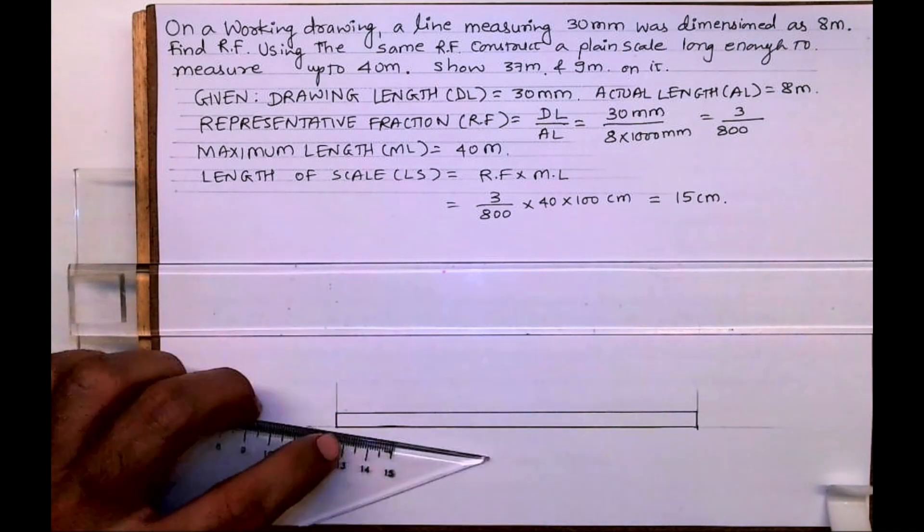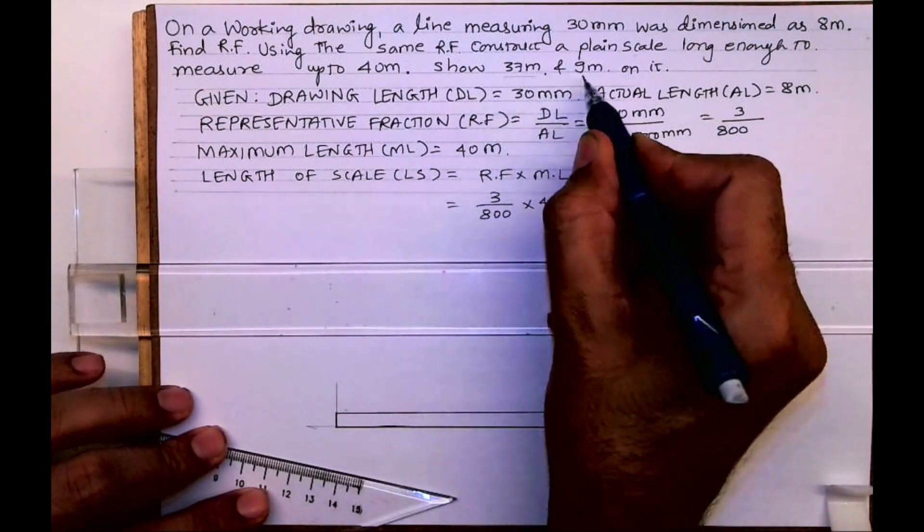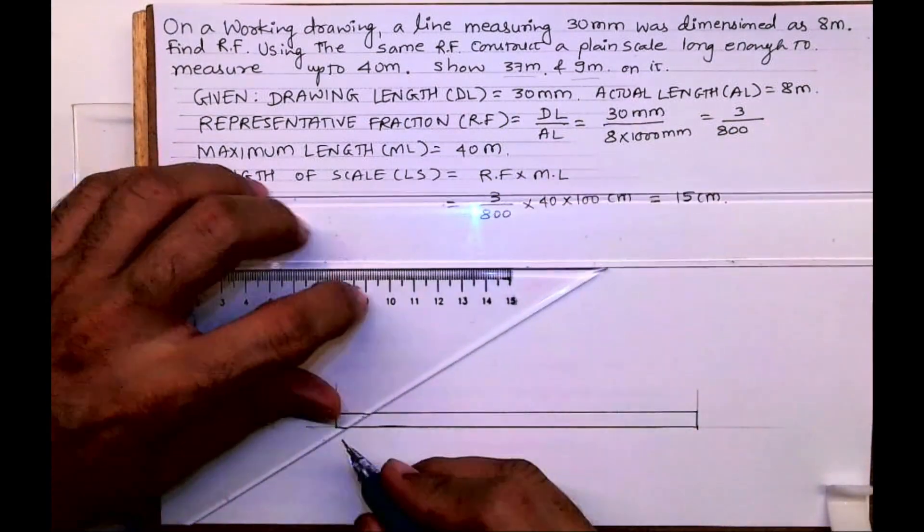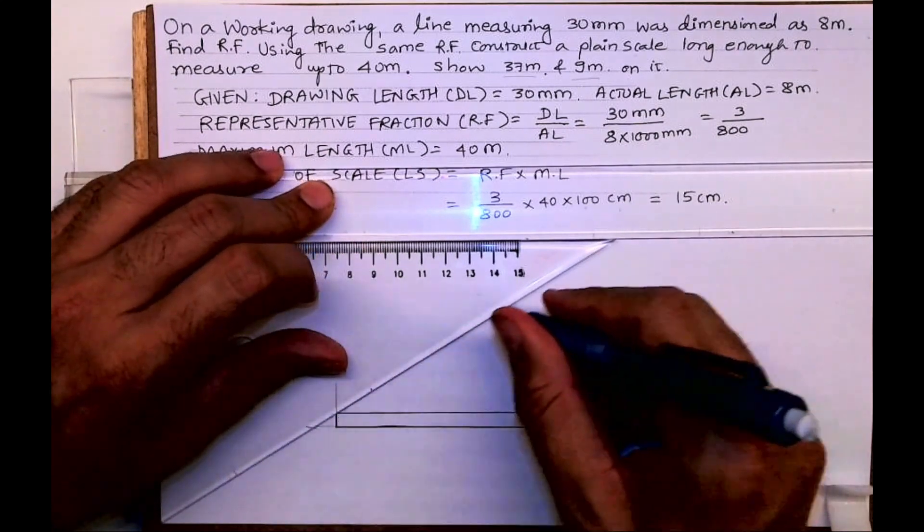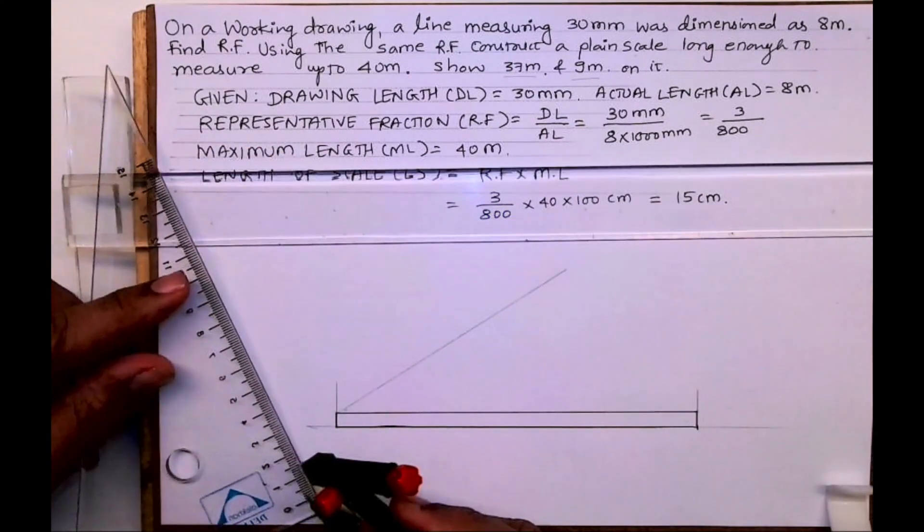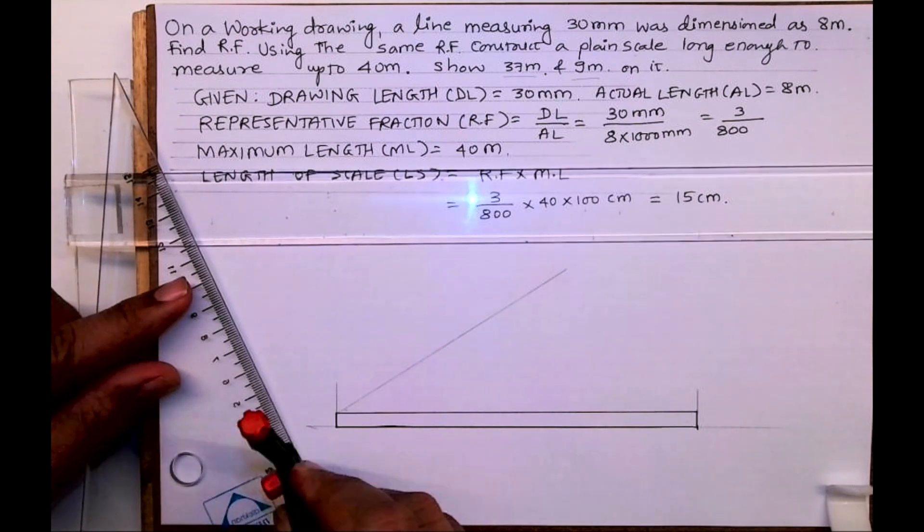So this is 15 centimeter by 5 millimeter. Now we need to mark 37 and 9mm. So I need to divide this line into four part, since it is 40 meters we are dividing into four part.